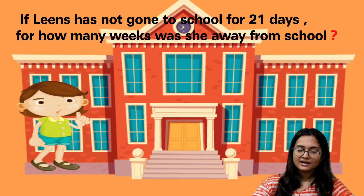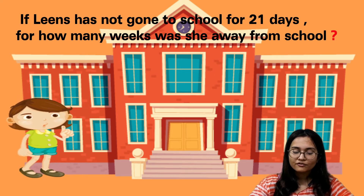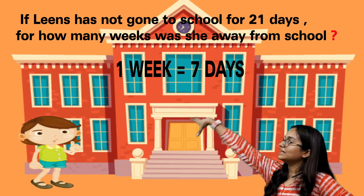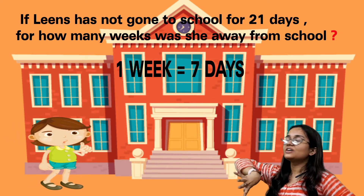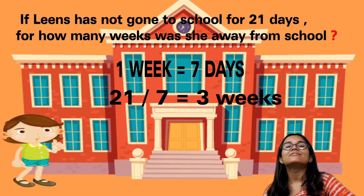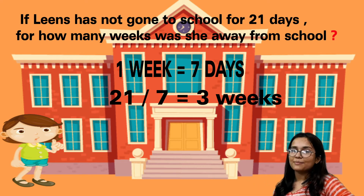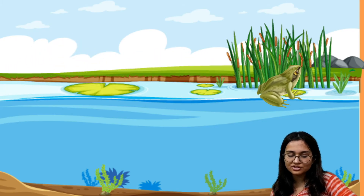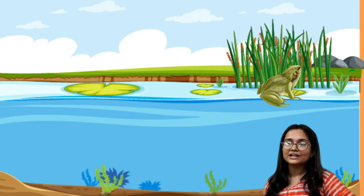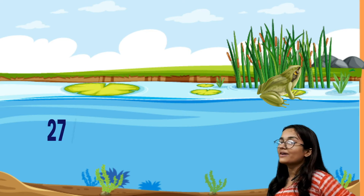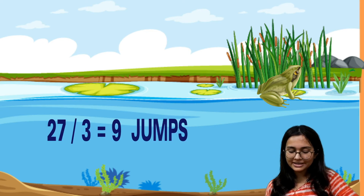Similarly, if Leela has not gone to school for 21 days, for how many weeks is she absent? We know that 1 week has 7 days, so we divide 21 by 7. We know 7 threes are 21, so she is missing school for 3 weeks. Also, a frog jumps 3 steps at a time starting from 0 — to count the jumps to reach 27, we divide 27 by 3, and the answer is 9 jumps.